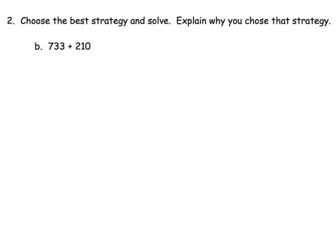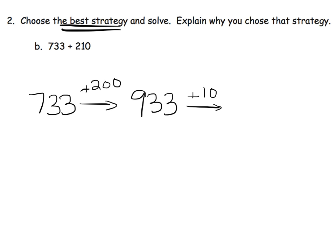On this one, what's the best strategy? I don't know, whatever the students like. But I think on this one I'm going to do the arrow method. So I'm going to begin by adding 200, so that gives me 933. Then I'll add 10 and that gives me 943, and there's my answer.